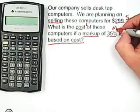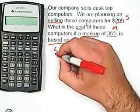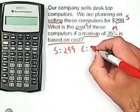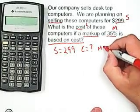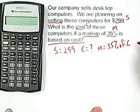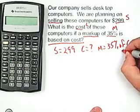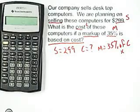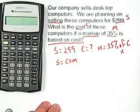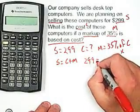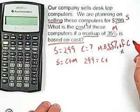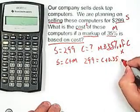The markup is 35% based on cost, so that's our markup. We know the selling price is $299, we don't know the cost, and markup is 35% of cost. Remember, 'of' means multiply. We're going to use the formula S equals C plus M, so $299 equals C plus — move the decimal place two places, add a zero — so 0.35C.